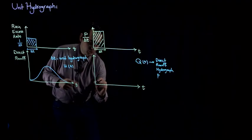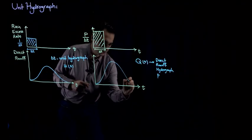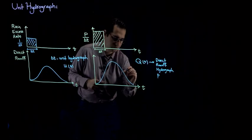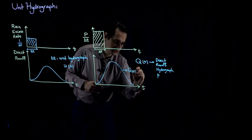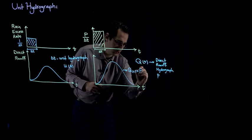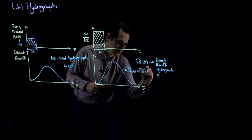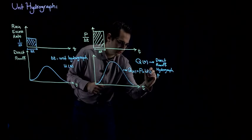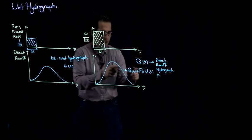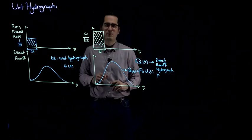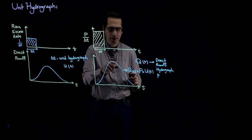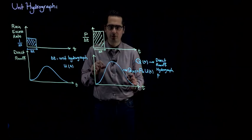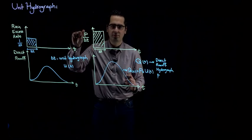The linear superposition principle tells us that this hydrograph is going to be linearly proportional to the unit hydrograph. So first of all, the shape of the hydrograph will be something like this. And then Q(T) for the hydrograph is going to be the depth of rainfall times coordinates of unit hydrograph U(T). U(T) times P. This simple formula is going to give us the hydrograph, the direct runoff hydrograph generated for a rainfall depth of P.